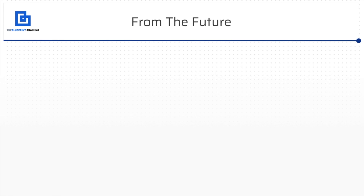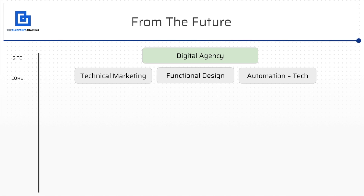Let's take a look at another live example. This is from our agency From The Future. Now again, this is also a digital agency, but because the concepts and the core of what we do are different than what we did at Webris, that's going to impact the pillars, the content of the website, and the strategy. The site is a digital agency, and you can see how these are not services — that's important. Remember how I talked about having a strategy for each of these and understanding what it is that the business does and what you want out of it. There are different ways you can approach this. We came up with three things that are core to what we want to communicate about our business and how we want to market ourselves: technical marketing, functional design covering UX and UI, and automation and tech. We want to show people that we are technically proficient at marketing, design, and automation. That's the core of what we do, and our services live within that.